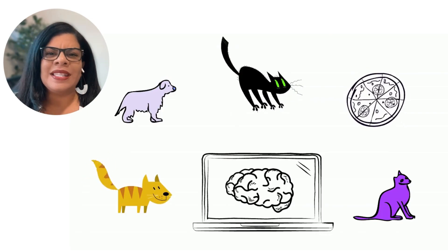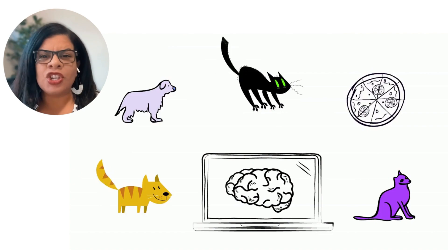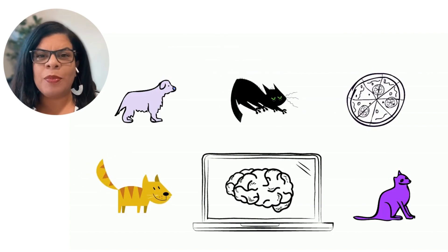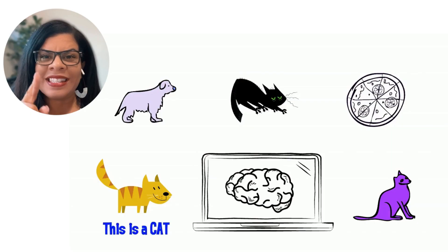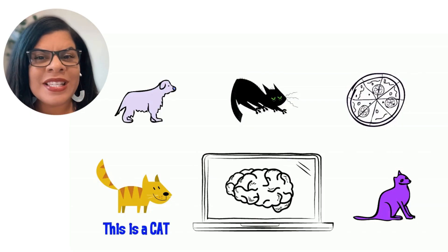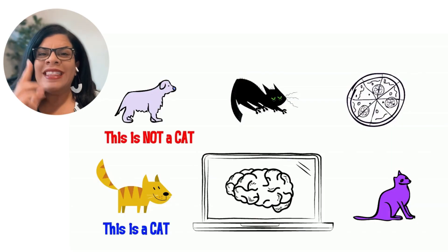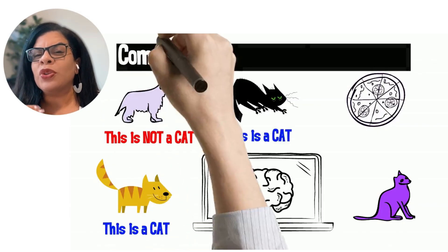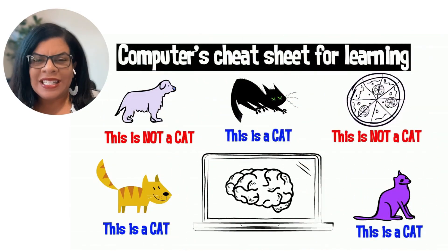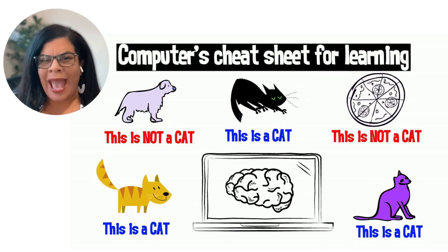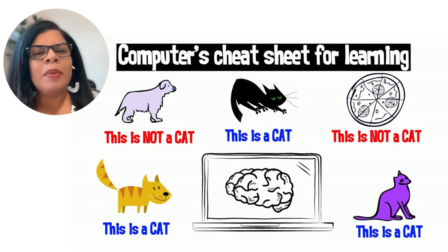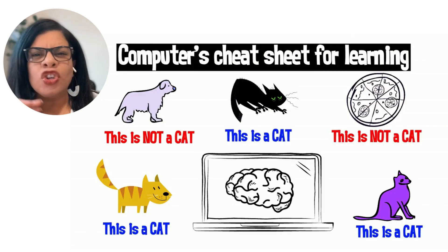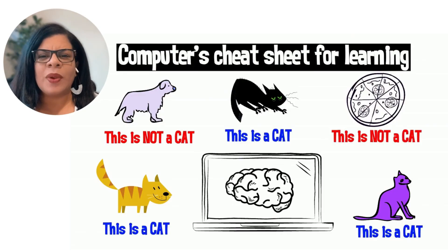For example, the first picture is of a fluffy orange tabby cat and it gets labeled, this is a cat. The next picture is of a dog and it gets labeled, this is not a cat. These labels are the computer's cheat sheet for learning. It doesn't know what a cat is yet, but it starts to understand as it gets fed the data — and you're training it in this case.